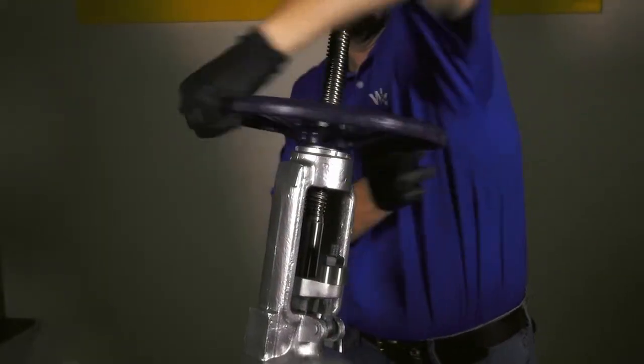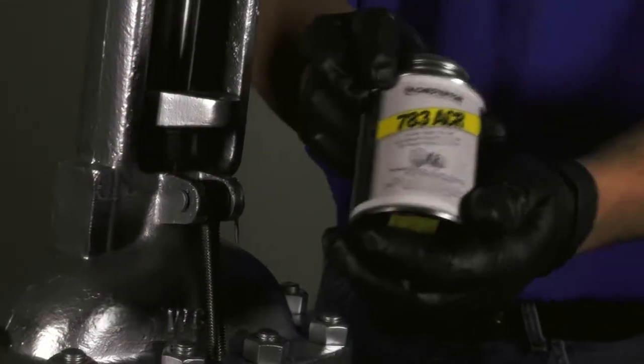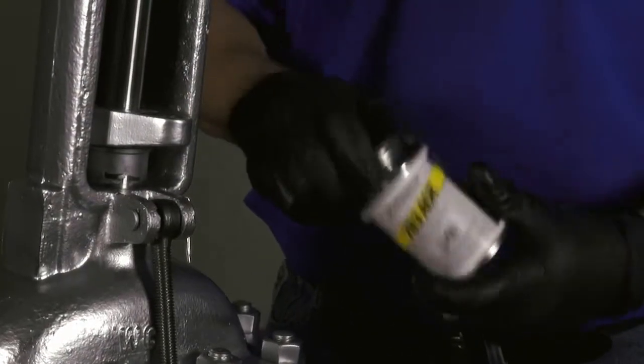At this time, fully close the valve. Coat the eye bolt using Chesterton 783 Premium anti-seize as a lubricant.